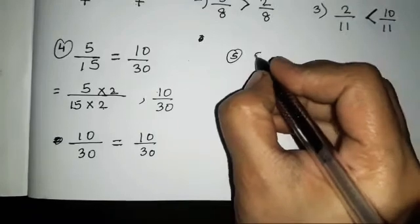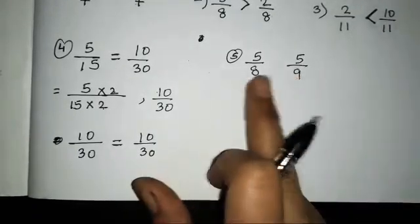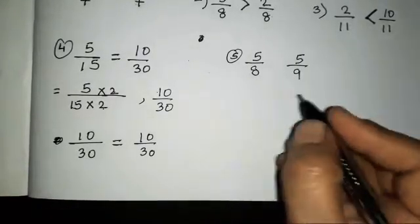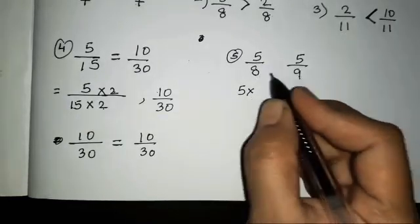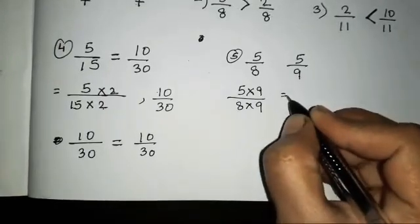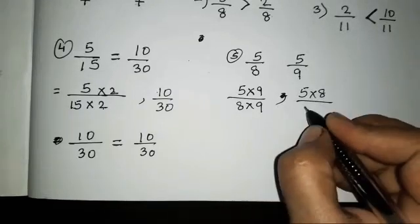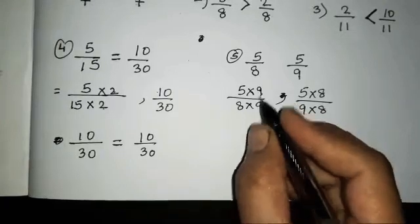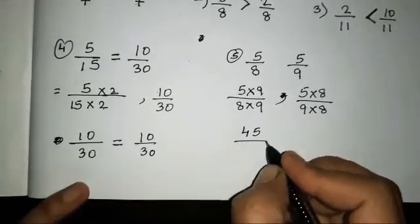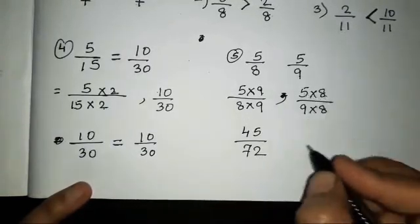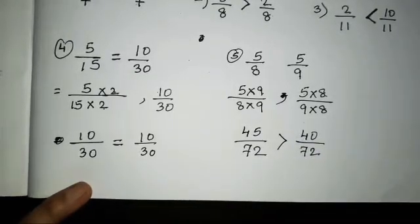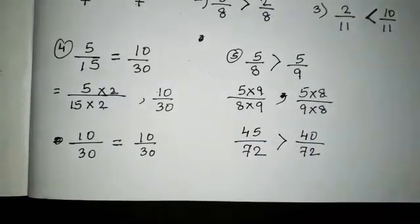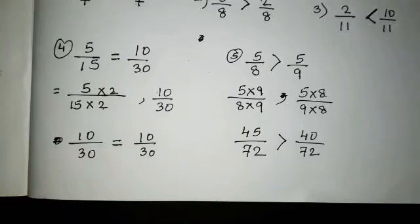Let's solve one more — 5 upon 8 and 5 upon 9. Both numerators and denominators are different, so we make equivalent fractions by cross-multiplying. 5 into 9 over 8 into 9, and 5 into 8 over 9 into 8. That gives 45 upon 72 and 40 upon 72. Since 45 is greater, the first fraction 5/8 is greater. Show the greater sign above as well.